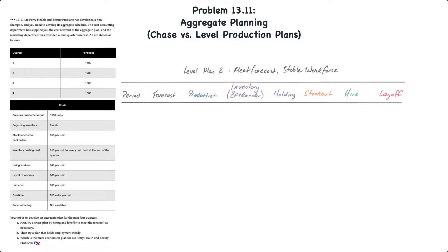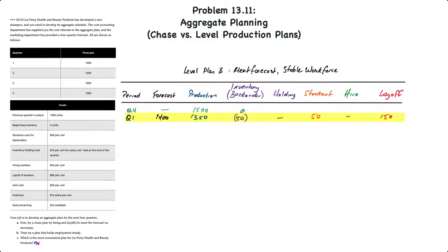The second plan is a level plan that meets the forecast and includes a stable workforce. Under this plan we will rely on stock-outs which will then need to be filled as back orders, inventory holding costs, and the cost to hire or lay off any staff as required. There are no back orders or inventory to start with from the previous quarter.